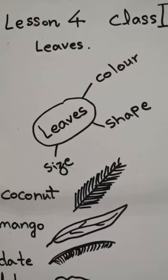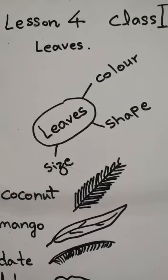So, plants change across different areas. According to that area, their leaves and their shapes are different.